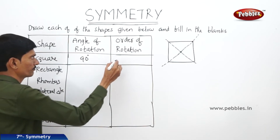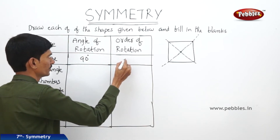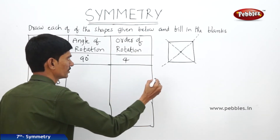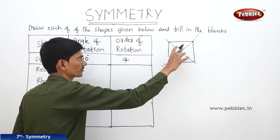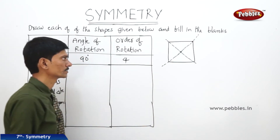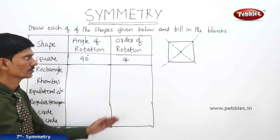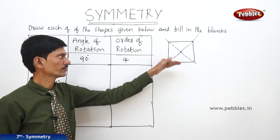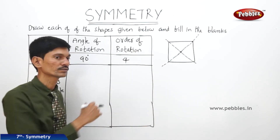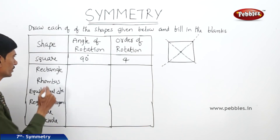The order of rotational symmetry for the square is 4, because by rotating the square 4 times we will get back its original position. Overall, 4 times we are getting back its original position, so the order of rotation is 4.